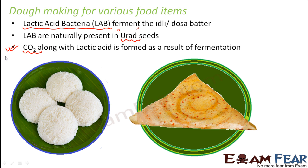If the batter is fermented for too long — say for two days or so — the batter turns too sour. This sourness is due to the formation of lactic acid, just as in the process of curdling where lactic acid makes curd sour. If fermentation happens for a longer period of time, too much lactic acid gets formed. The longer it is left for fermentation, the larger the amount of lactic acid formed, and the more sour the taste will be.